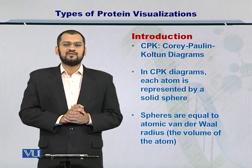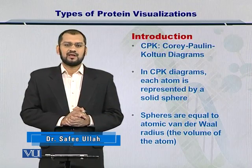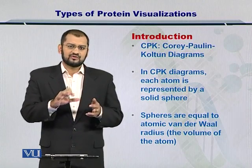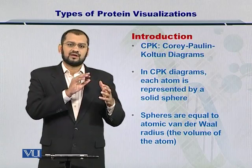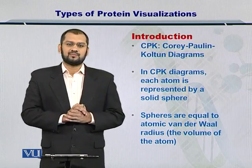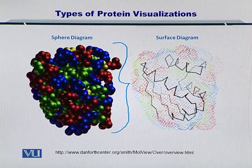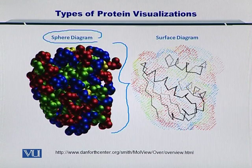The first one is the CPK model, or the Corey-Pauling-Koltun diagrams. In CPK diagrams, each atom is represented as a solid sphere, and these spheres are organized in 3D. You have a very large collection of 3D spheres positioned as per the location of the alpha carbon in the protein structure. The size of each sphere represents the Van der Waals distance, or the size of the atom. There are two ways to draw CPK diagrams: the sphere diagram, in which everything is plotted as spheres, and the surface diagram.